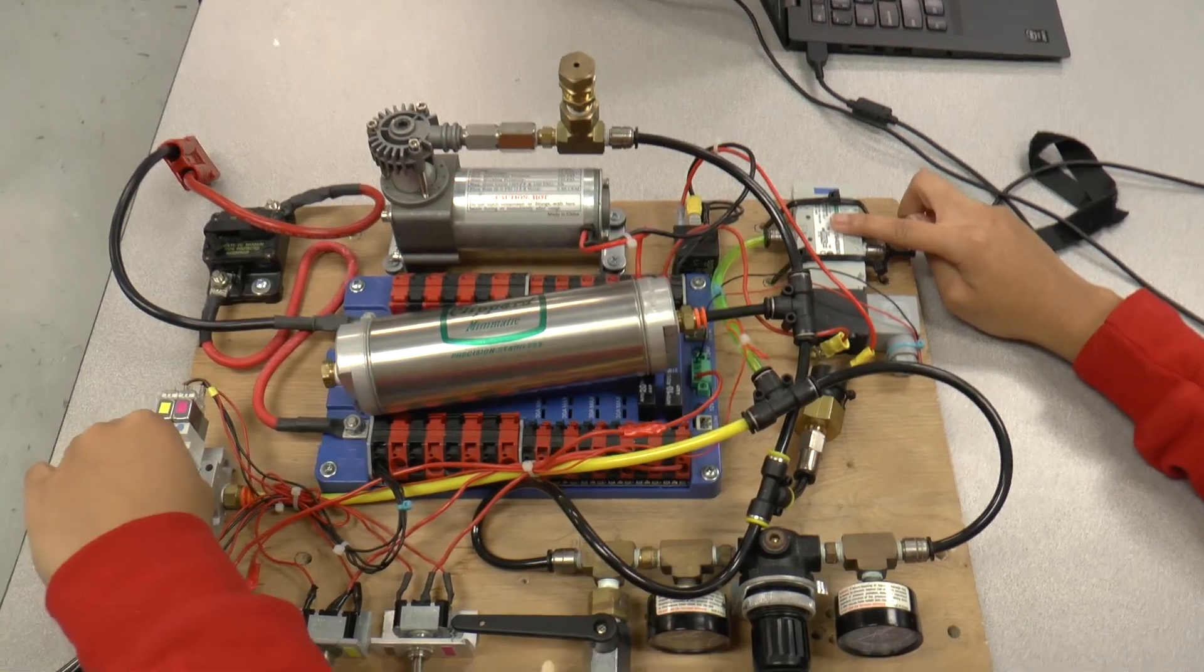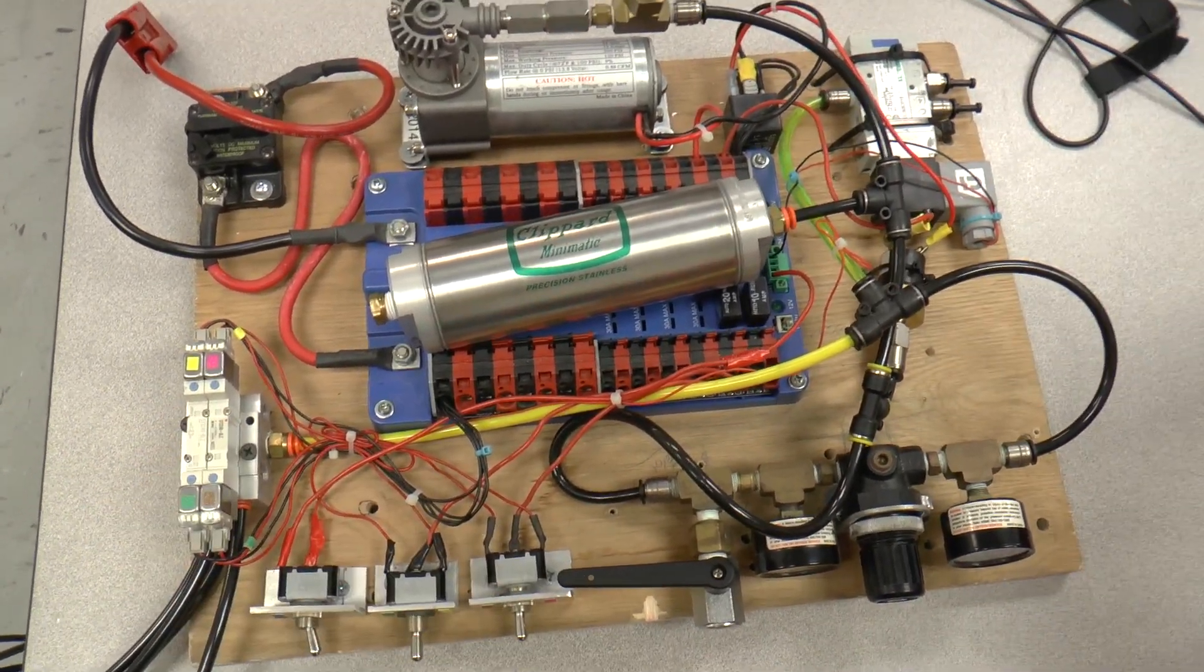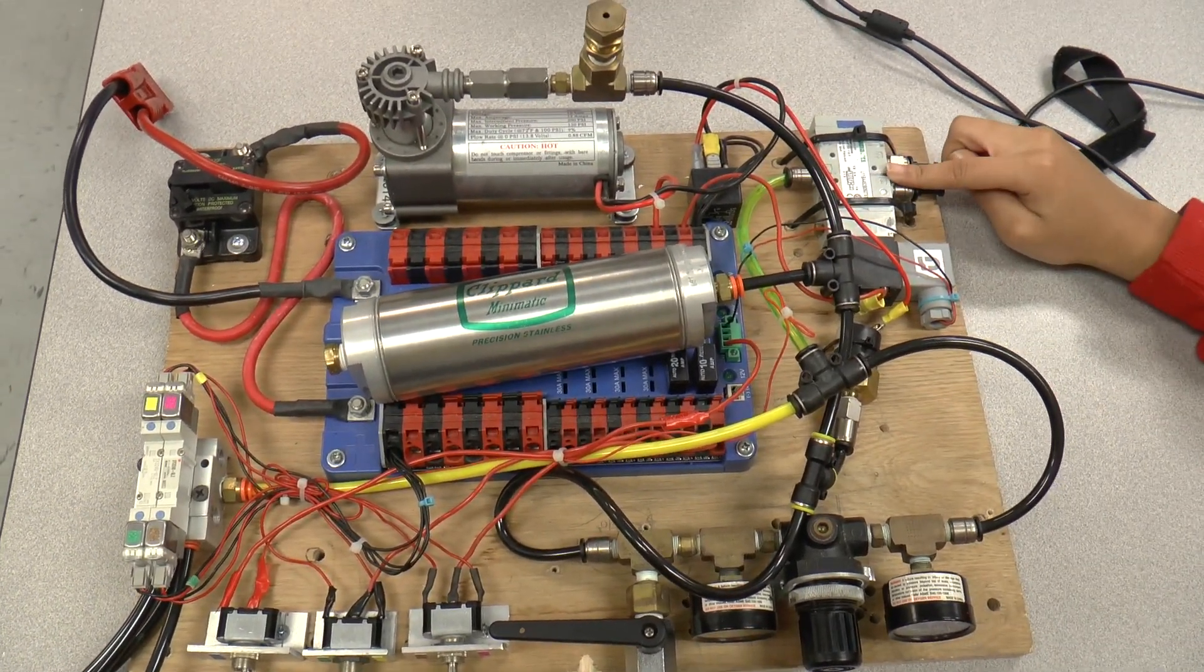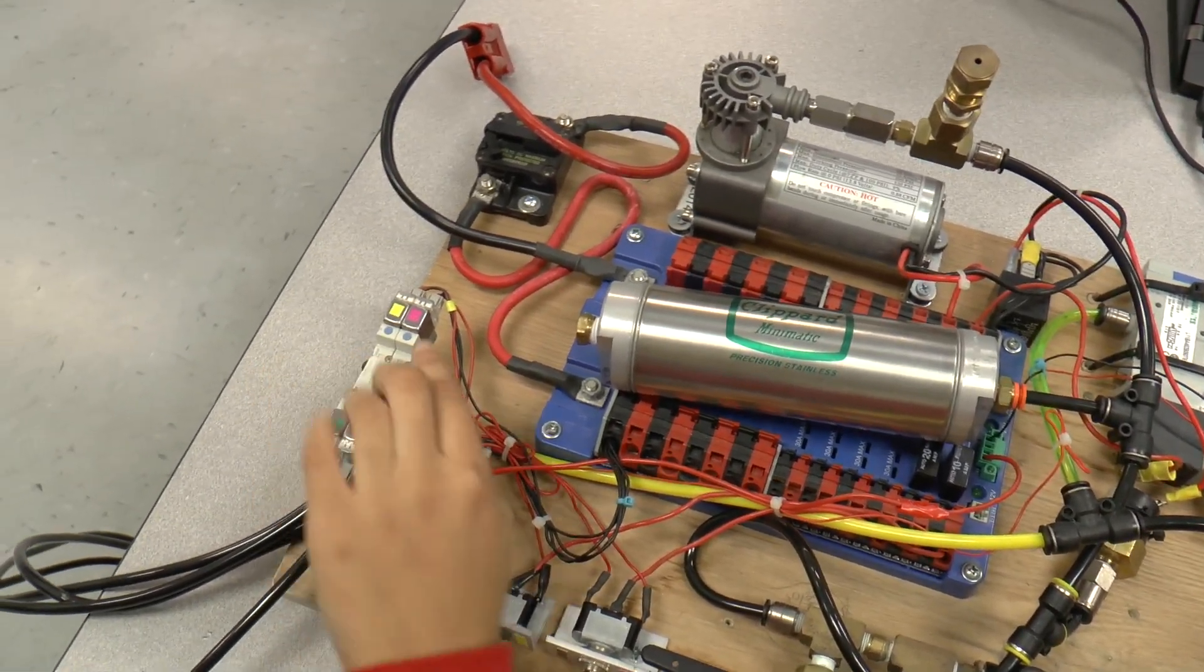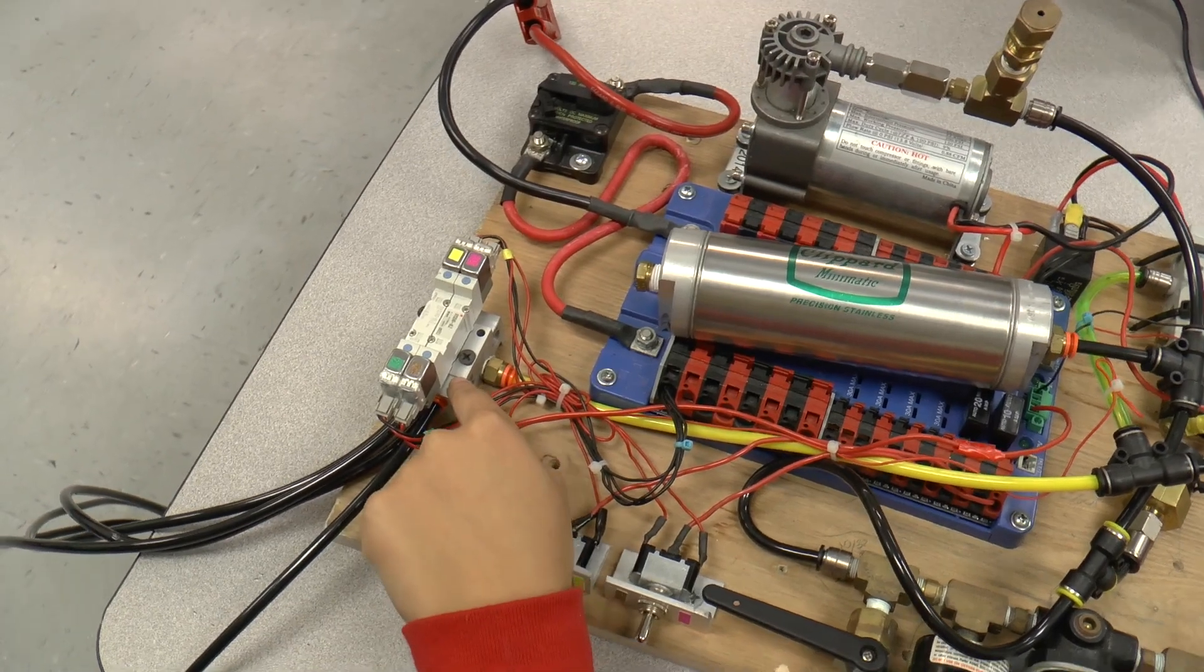Over here are the solenoid valves. These two are on the manifold.